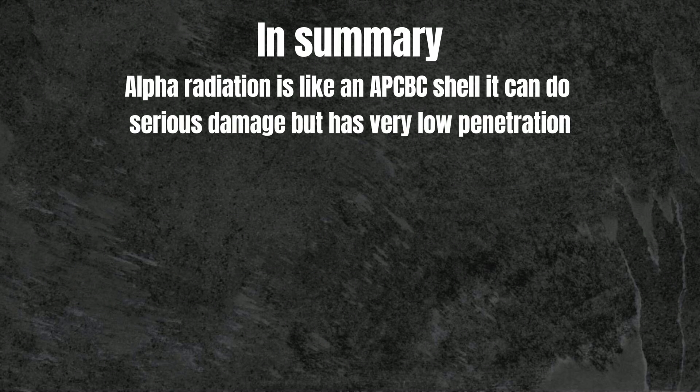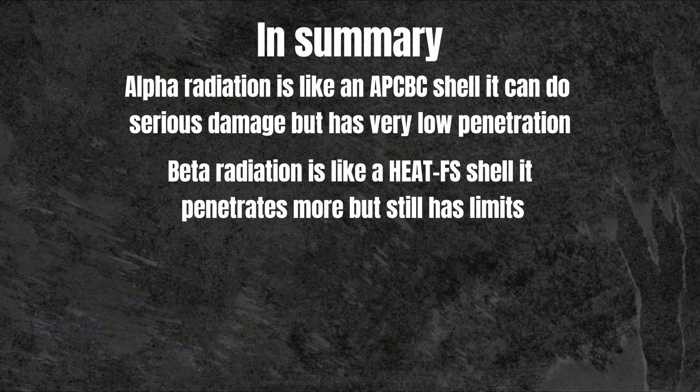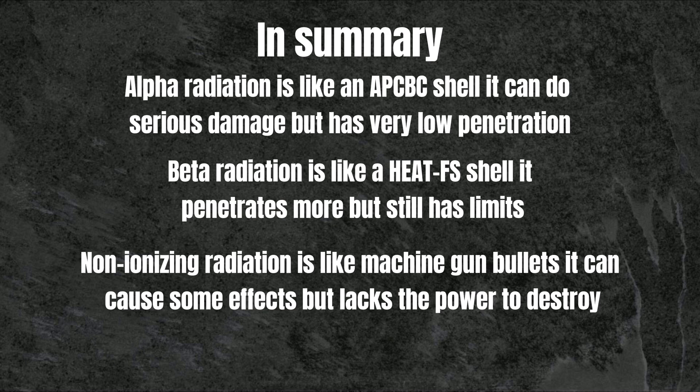In summary, alpha radiation is like an APCBC shell — it can do serious damage, but has very low penetration. Beta radiation is like a Heat FS shell — it penetrates more, but still has limits. Non-ionizing radiation is like machine gun bullets — it can cause some effects, but lacks the power to destroy. This is just the first part of our radiation series.